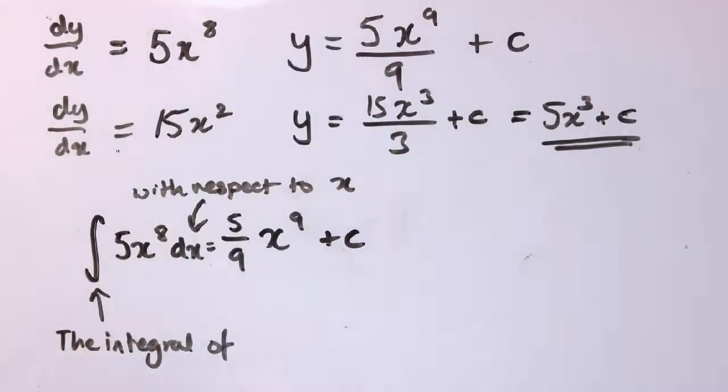So, as always in maths, when you read out the symbols, they should make sense logically. You should be able to read them as sentences and they should make sense. So, this says the integral of 5x⁸ with respect to x is equal to 5/9 times x⁹+c, where c is an arbitrary constant.